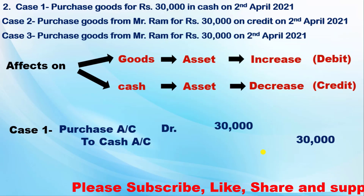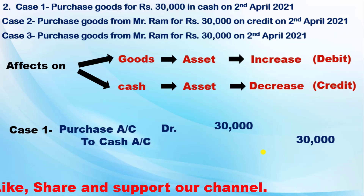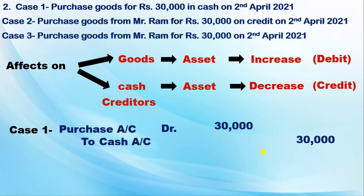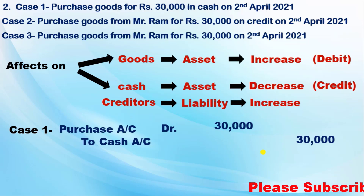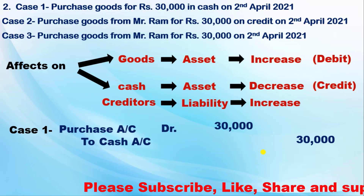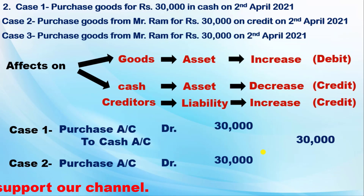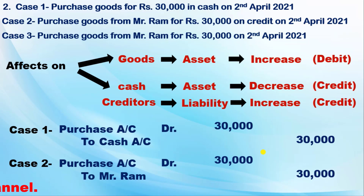For Case 2, goods purchased from Mr. Ram on credit: the first account affected is goods — goods increased, so you debit the purchase account, same as Case 1. The second account affected is not cash but Mr. Ram, who is our creditor. Creditor is our liability, and the liability increases here, so if liability increases, it is always credit. Therefore, in Case 2, debit purchase account and credit Mr. Ram's account 30,000.